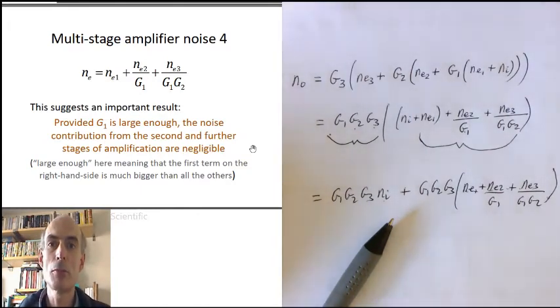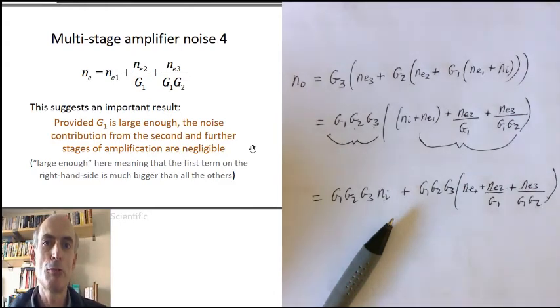It's why in some radio astronomy applications, the very first amplification stage is cooled by liquid nitrogen in order to try and make it as low noise as possible. Whereas second and subsequent stages of amplification, they don't bother to cool it because it really doesn't have that much of an effect on the overall noise added to the system.